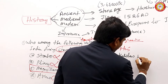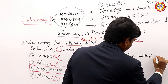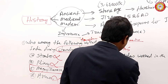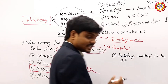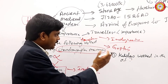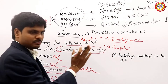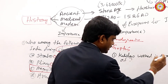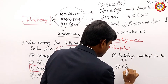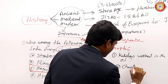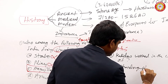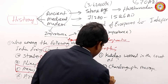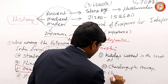Kalidasa worked in the court of — this is a previous year question. It is not related to travelers but I am quoting the example. Kalidasa worked in the court of — they gave options: Chandragupta Maurya, Chandragupta One, Chandragupta Two, none of the above. This is very important.